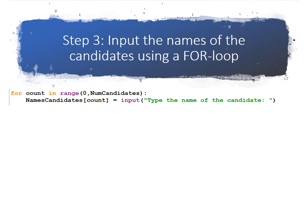Now we're ready for step three. In step three, we're going to input the names of the candidates using a for loop. So let's say there are two candidates in the class. For count in range from zero repeating two times, names of candidates of zero is equal to input the first name. Then count is updated and we input the second name.